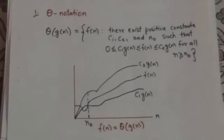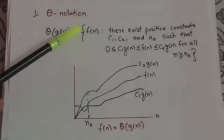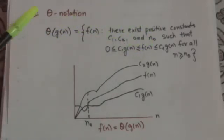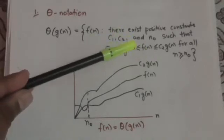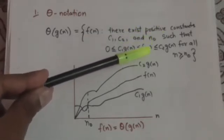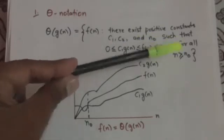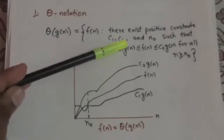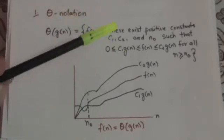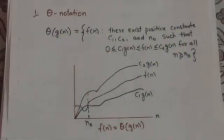Theta notation bounds a function from above and below. For a given function g(n), we denote Theta g(n) as the set of functions f(n) such that there exist positive constants c1, c2, and n0, such that the value of f(n) is always greater than or equal to c1·g(n) and less than or equal to c2·g(n), where c1·g(n) is greater than or equal to 0, for all values of n greater than or equal to n0.